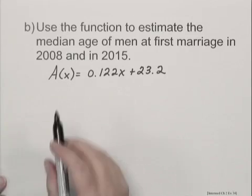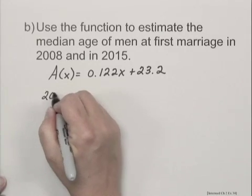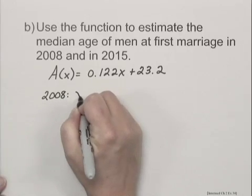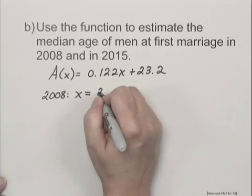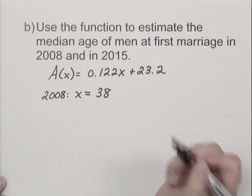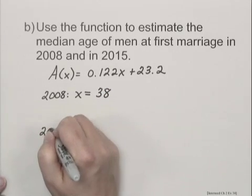And then we defined x as not the year, but the number of years since 1970. So for 2008, x would equal 2008 minus 1970, or 38, it's 38 years since 1970. And 2015, x would equal 2015 minus 1970, or 45.